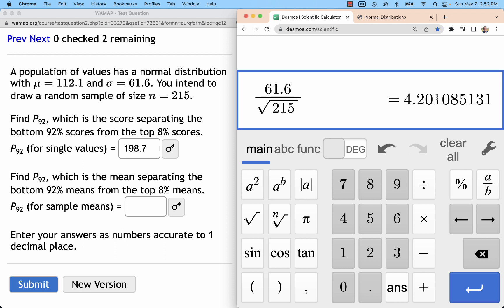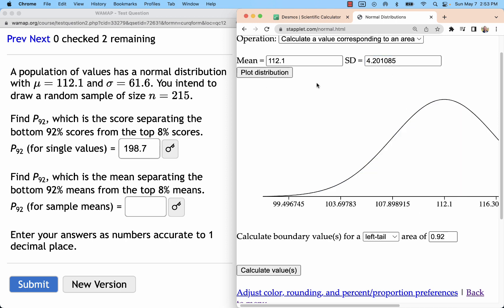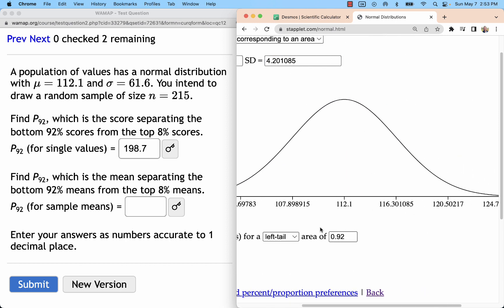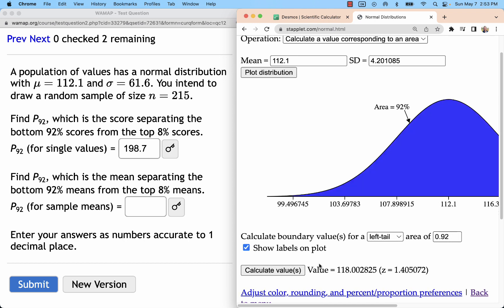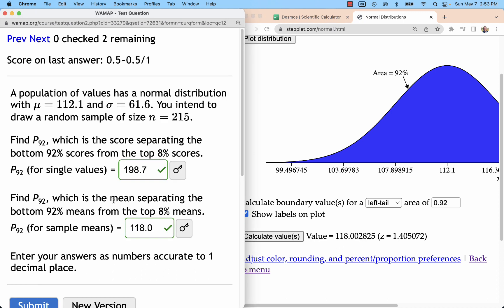Keeping a lot of decimal places, I like to do six decimal places for these types of problems. That's 4.201085 and we have relabeled it with left tail 92% or 0.92. This time is going to be 118.0 for that problem.